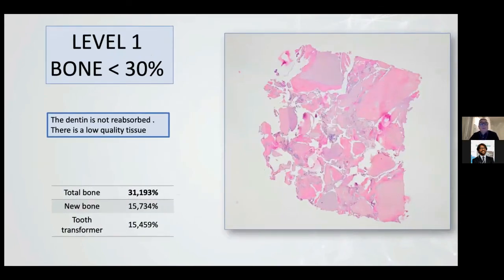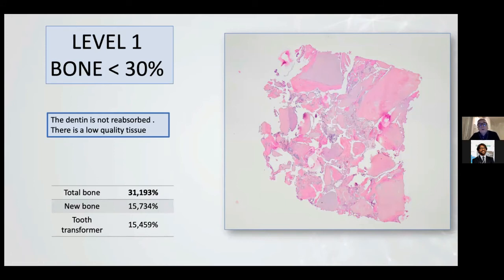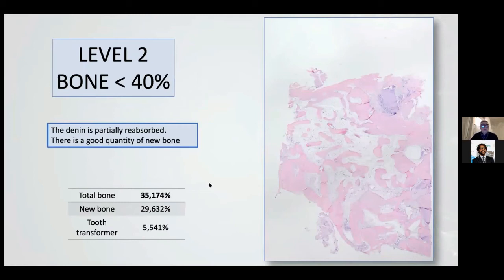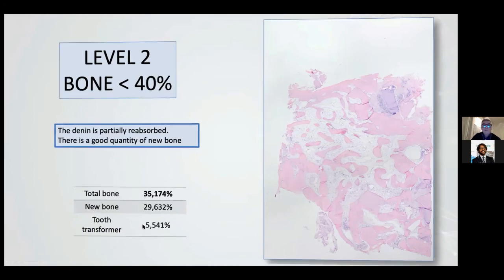Level one is where bone is minus 30%. In this case the total bone is 31%, but the new bone is only 50% and tooth transformer is 50%. We can observe soft tissue between some granules — this is not a good result. Level two is where the total new bone is 35%, dentine is partially resorbed, and we have good quality of new bone. In this image new bone is 29% and tooth transformer is only 5%.